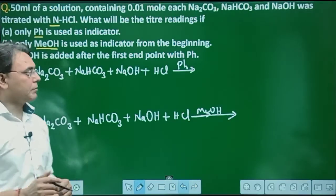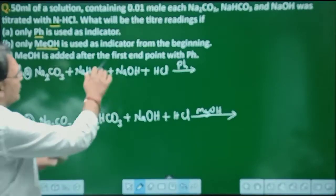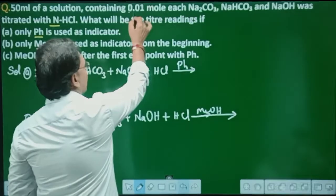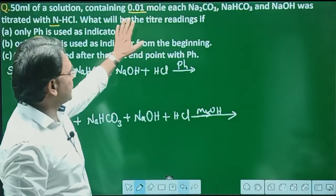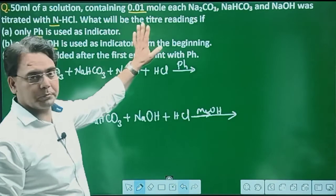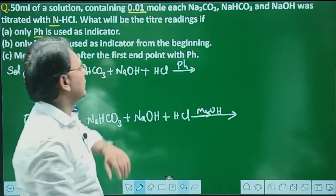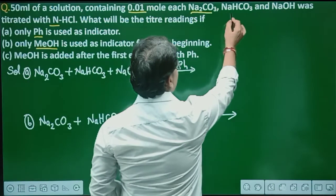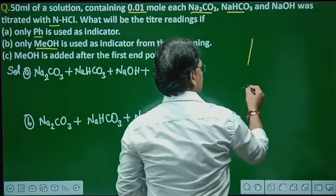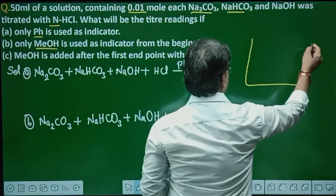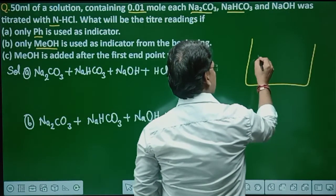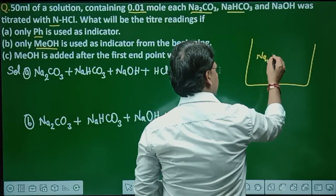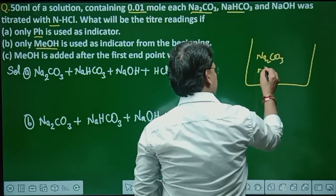You can understand the question — how many moles are present? 0.01 moles each of Na₂CO₃, NaHCO₃, and NaOH. You can understand the container: this container has Na₂CO₃ and NaHCO₃ (and NaOH).